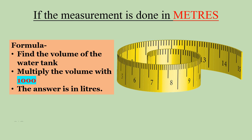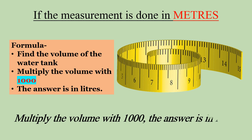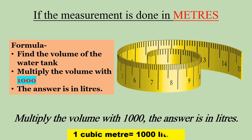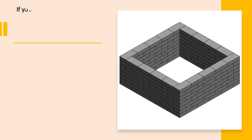But if the measurement is taken in meters, we use the same formula but we replace the value 28.32 by 1000, because one cubic meter equals 1000 liters. Let us take an example with units of measurement in meters.